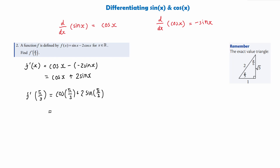Cos(π/3) — using SOH CAH TOA, cos is adjacent over hypotenuse, which gives 1 over 2, so it's a half. Then plus 2 times sin(π/3) — sin is opposite over hypotenuse, which is root 3 over 2. So we have a half plus 2 times root 3 over 2. The 2s cancel, giving a half plus root 3. Since this is a non-calculator paper, we can just leave our answer as 1/2 + √3.